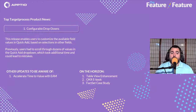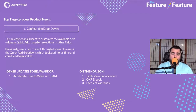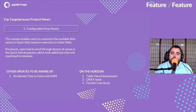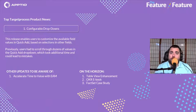For Target Process, we have configurable drop-downs with this release. It enables users to customize the available field values in quick-add based on selections in other fields — kind of like adding a favorites list to those field values so you don't have to scroll through all the values in the quick-add drop-down, which took additional time and opened up room for user error. On the horizon, we have table view enhancements, an Objectives and Key Results eBook, and a FAXS case study showing how a customer is using Target Process to demonstrate the value brought by their agile processes and agile portfolio.